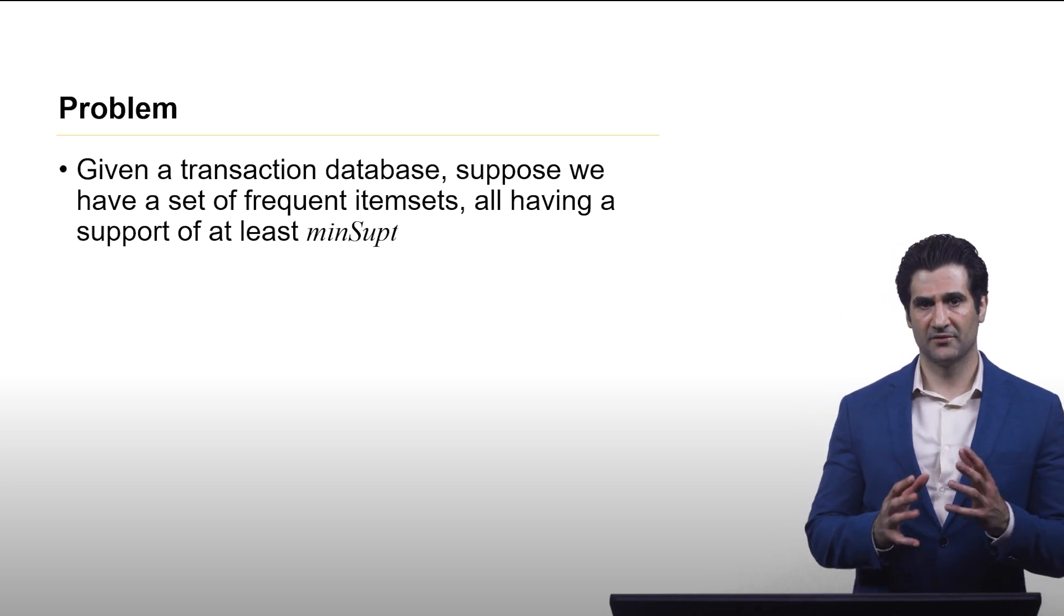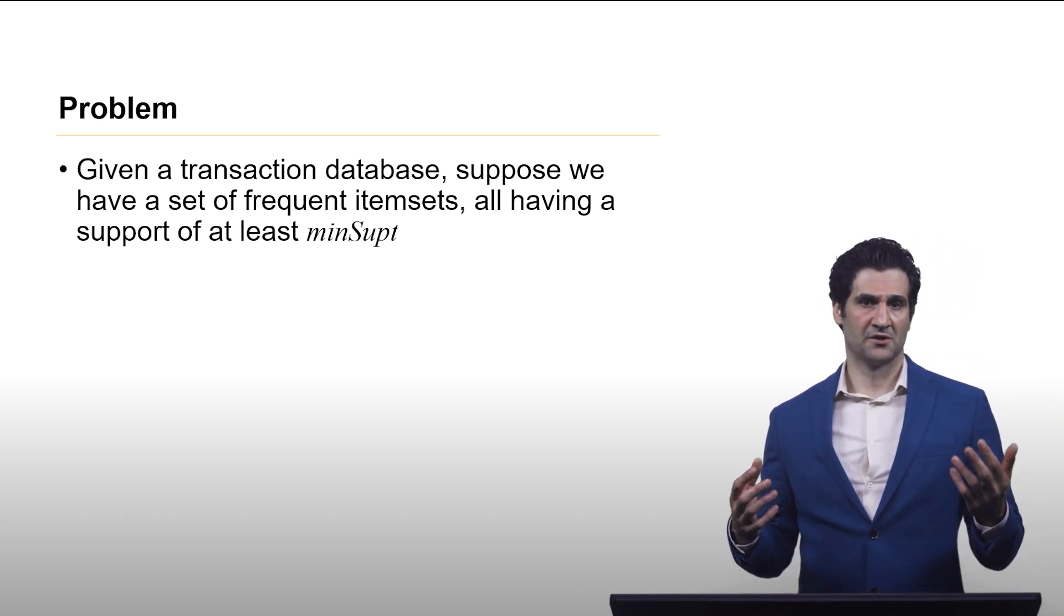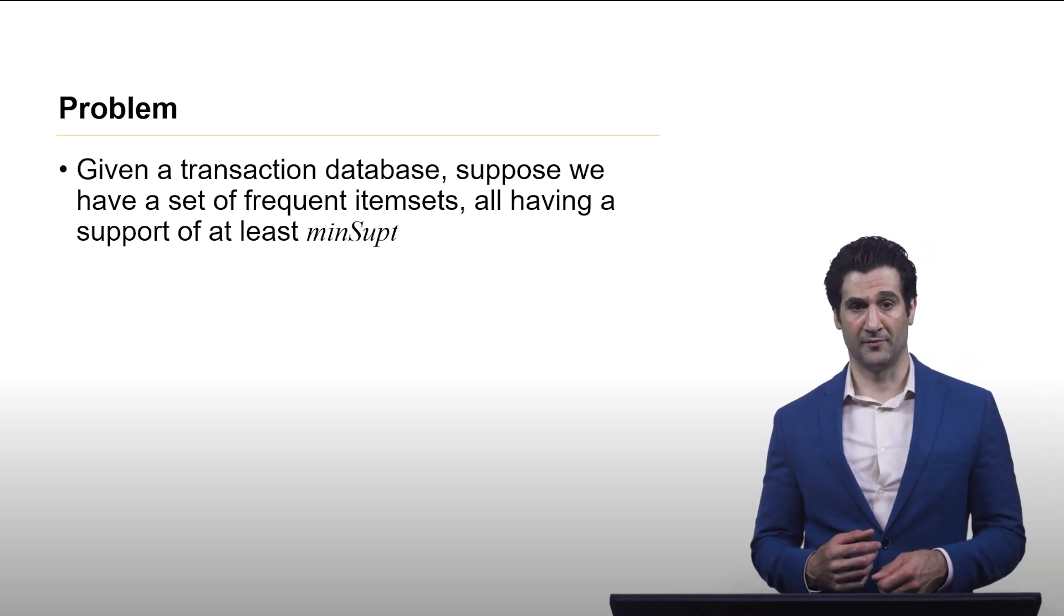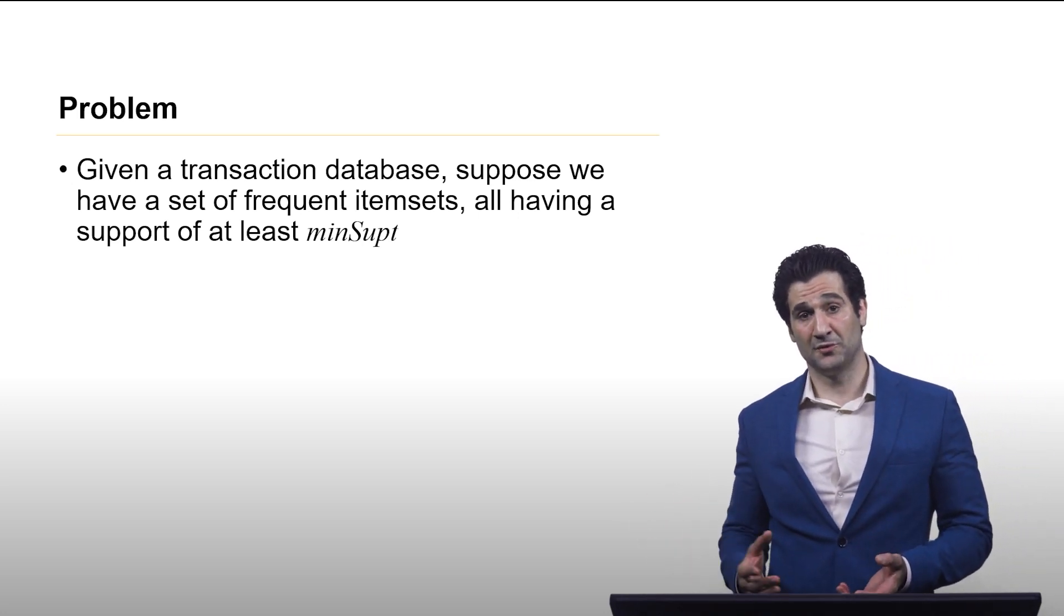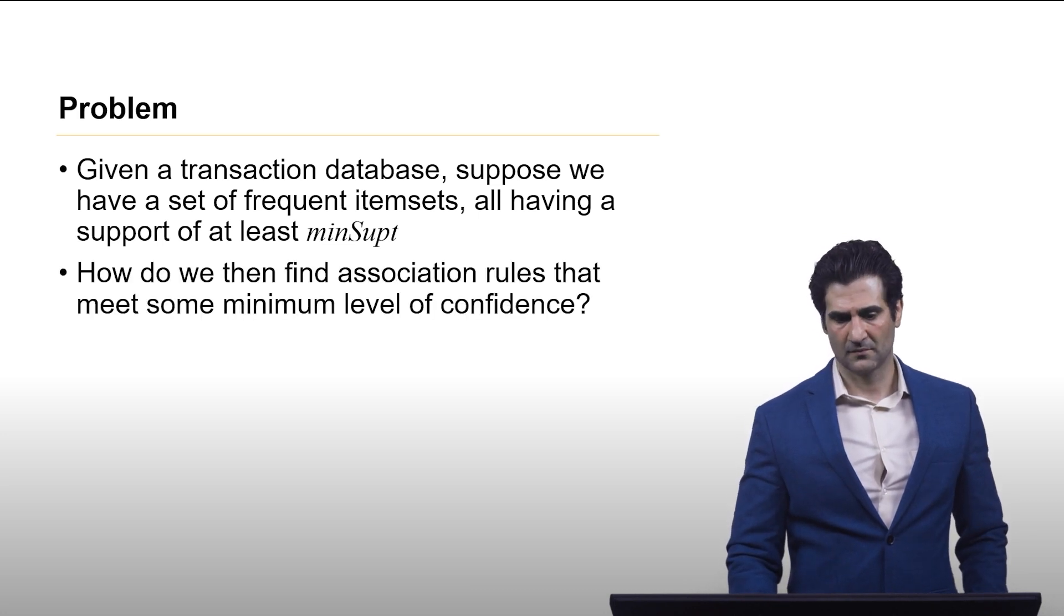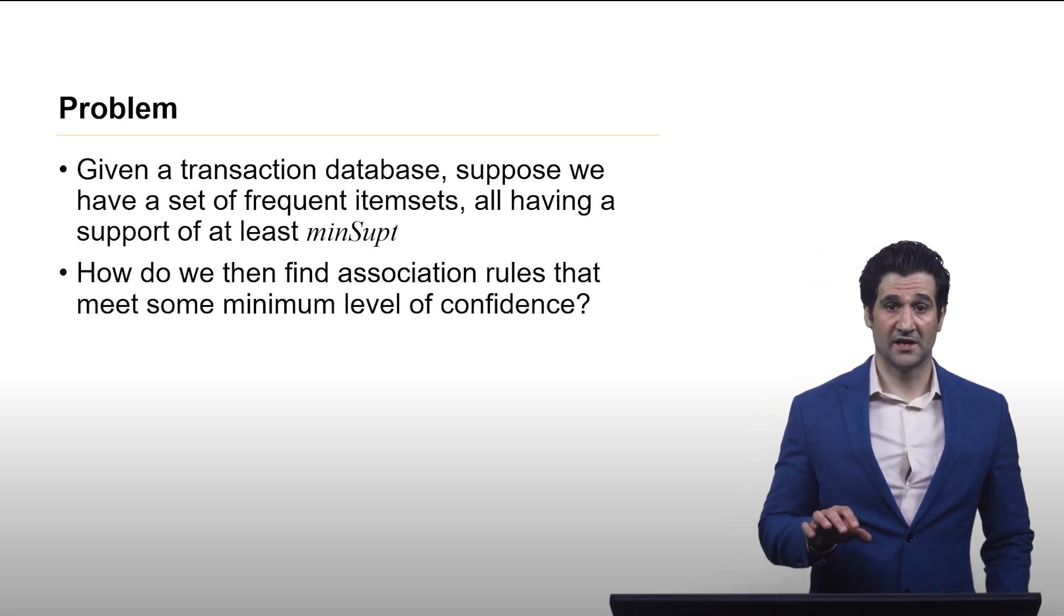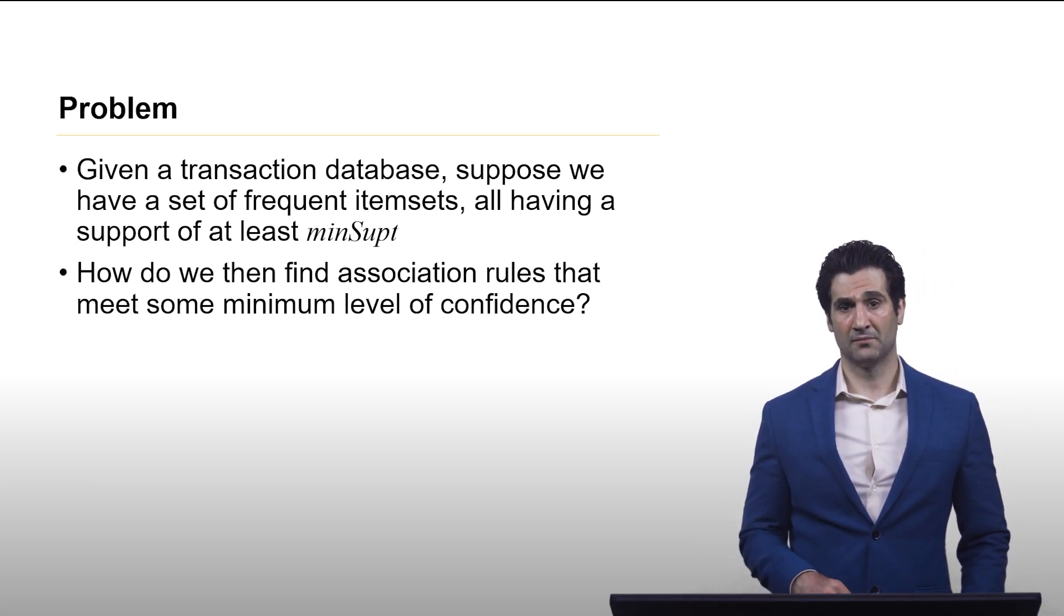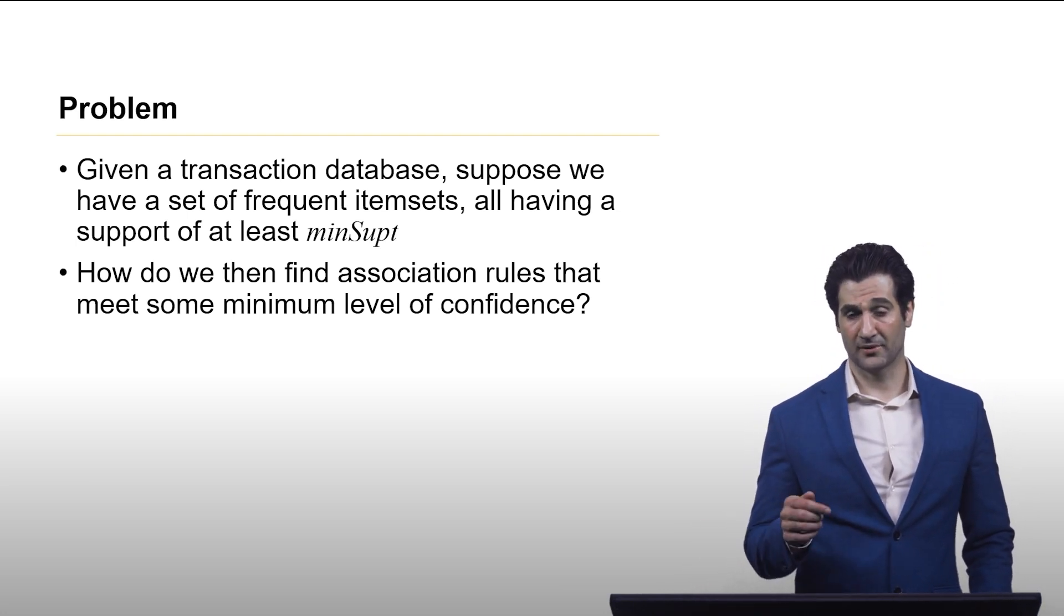Here's the problem. Given a transaction database, suppose we have a set of frequent item sets all having some level of minimum support. This can easily be done with the a priori algorithm. So how do we take that result and now find association rules that meet some minimum level of confidence or empirical probability?